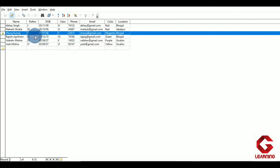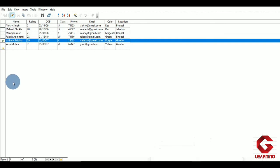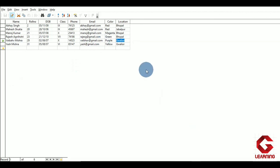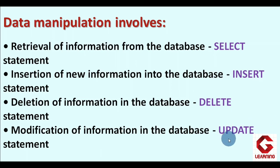The last command is UPDATE, whose purpose is modification of information in the database. Whenever you want to change a value stored in a cell, you use UPDATE. For example, the location of student Vivek Mishra is Walir, but if I want to change it to Jabalpur, I use the UPDATE command. So in DML we have four commands: SELECT to access information, INSERT to add new rows, DELETE to remove rows, and UPDATE to change cell values.